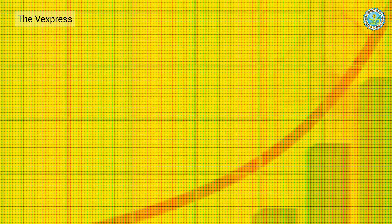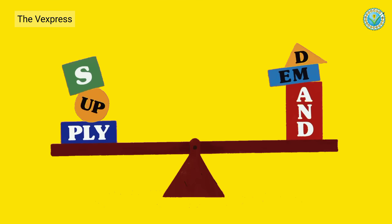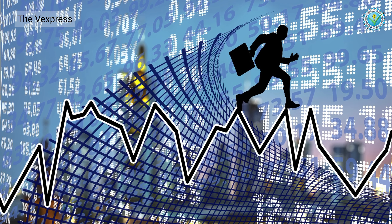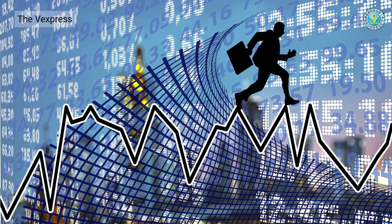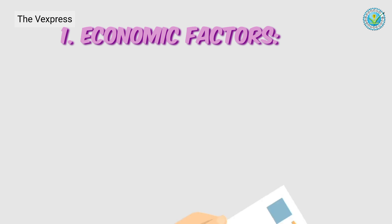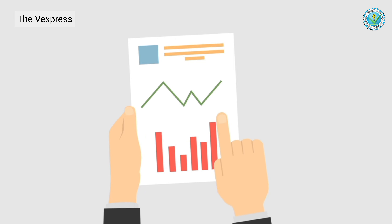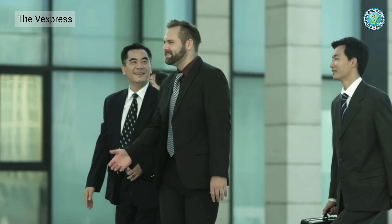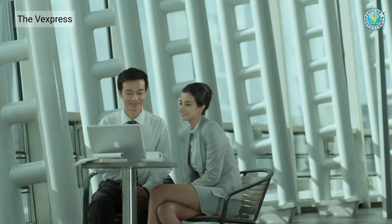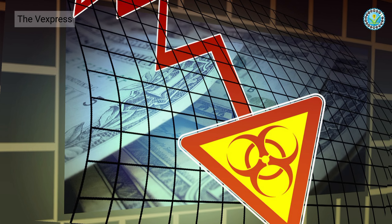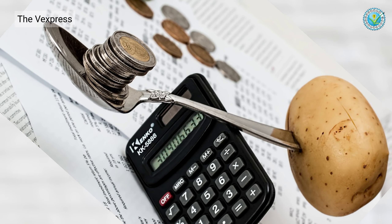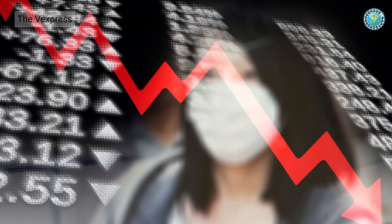By now it is clear that demand and supply are the main determinants of stock prices. So let's look at all the elements or factors that can affect this key determinant. One, economic factors: strong economic growth, indicated by high GDP, low inflation, and favorable government policies, usually leads to a rise in the stock market. On the other hand, economic downturns marked by slow growth, high inflation, or unfavorable policies can cause stock prices to fall.